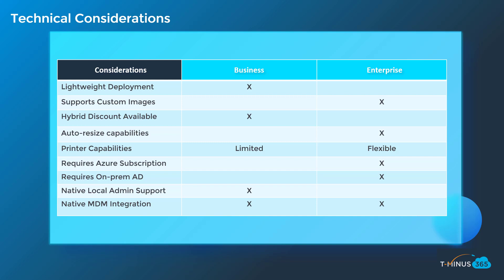The enterprise level plan supports custom images, whereas the business plan does not. The hybrid discount is available for the business level plan, but it is the same exact pricing as enterprise, so that may not really matter. Auto resize capabilities are available natively within Endpoint Manager Admin Center with enterprise, whereas they are manual with the business level plan — with potential for data loss and not being backed up to the cloud.